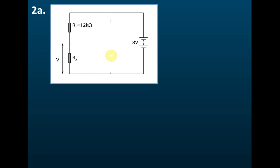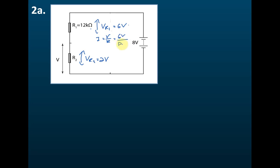With the circuit reduced to a two-resistor series circuit, we know that the potential difference across R2 must be at least 2 volts for current in the collector circuit to flow. Therefore the potential difference across R1 must be 6 volts, since both resistors share 8 volts. Knowing the voltage and resistance of R1 (6V and 12,000 ohms), we can find the current: I = V/R = 6 / 12,000.